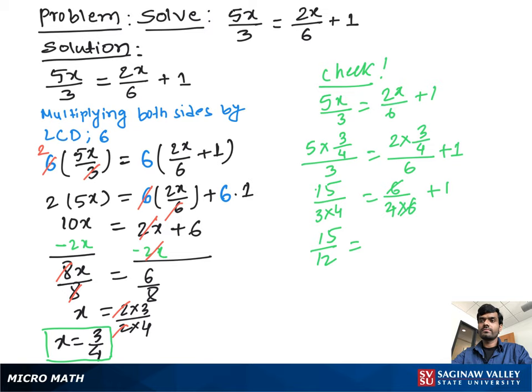Now 15 over 4 times 3 is 12 equal to 6, and 6 cancel out. So we write 1 over 4 plus 1.